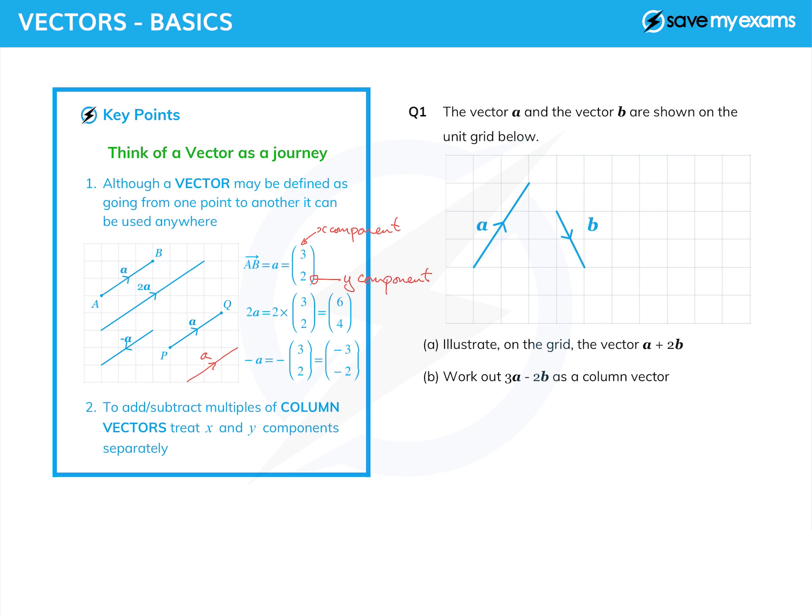So let's look at the question. There are a couple of vectors on the unit grid, and the first thing we're asked to do is to illustrate the vector a plus 2b. Well, when we're adding vectors together, we just do the obvious thing. So I'm going to draw a copy of the vector a there.